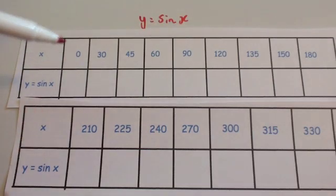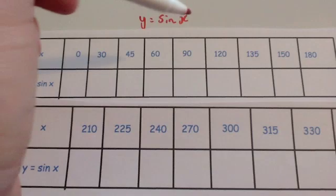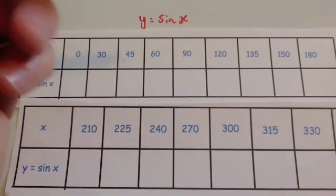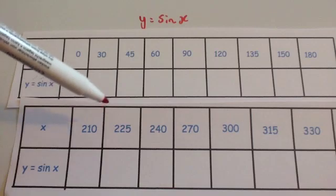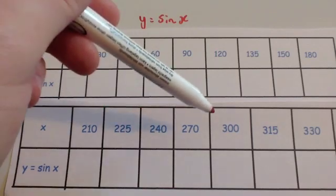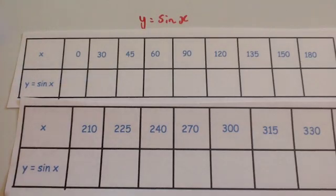So x: 0 being 0, 30, 45, 60, 90, 120, 135, 150, 180, 210, 225, 240, 270, 300, 315, 330 and 360.